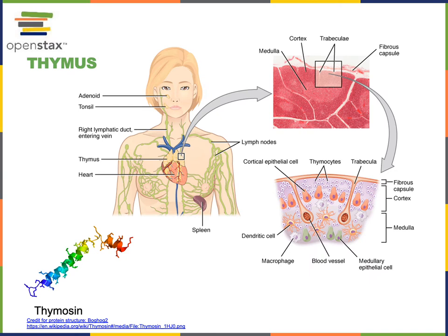The thymus is located within the superior mediastinum, just anterior to the arch of the aorta. The function of the thymus is important for the maturation of leukocytes — a specific subtype known as the T-lymphocytes mature within the thymus to become fully immunocompetent, meaning that they become capable of responding to an infection.